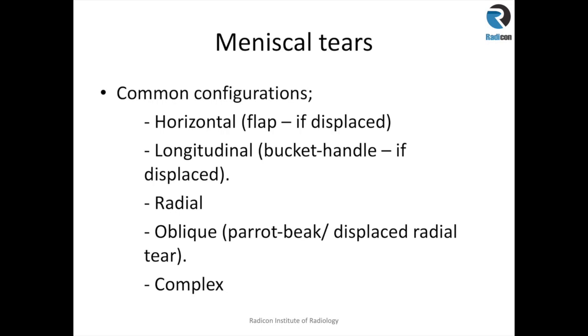The displaced horizontal tear is called a flap tear. The displaced longitudinal tear is called a bucket handle tear, and the oblique tear can be called a parrot beak tear or a displaced radial tear.